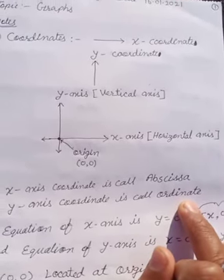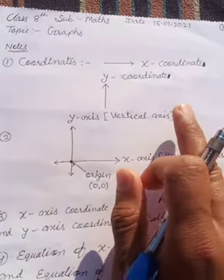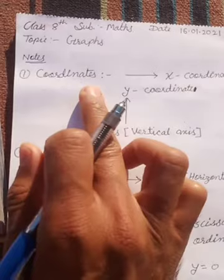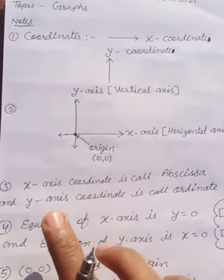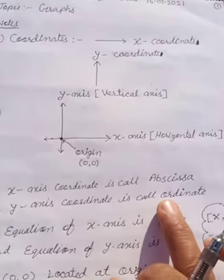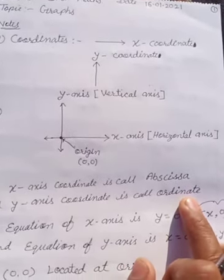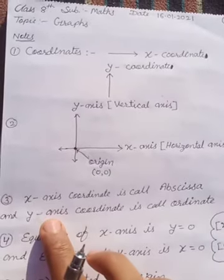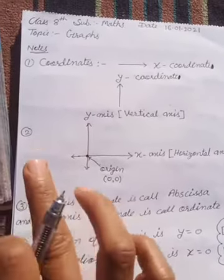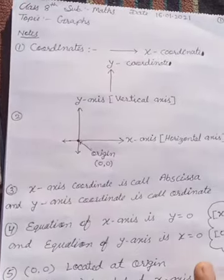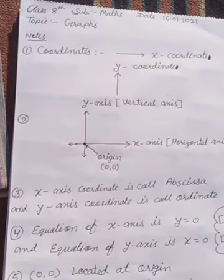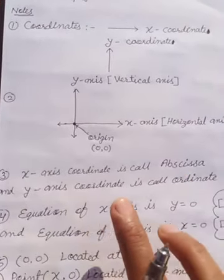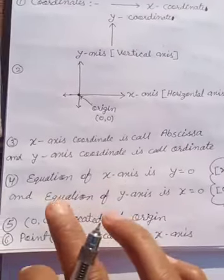Both x-axis and y-axis together are called coordinates. The point on the y-axis is called a coordinate, and both x-axis and y-axis points together are your coordinates. The name of the x-axis point is abscissa, and the name of the y-axis point is ordinate.